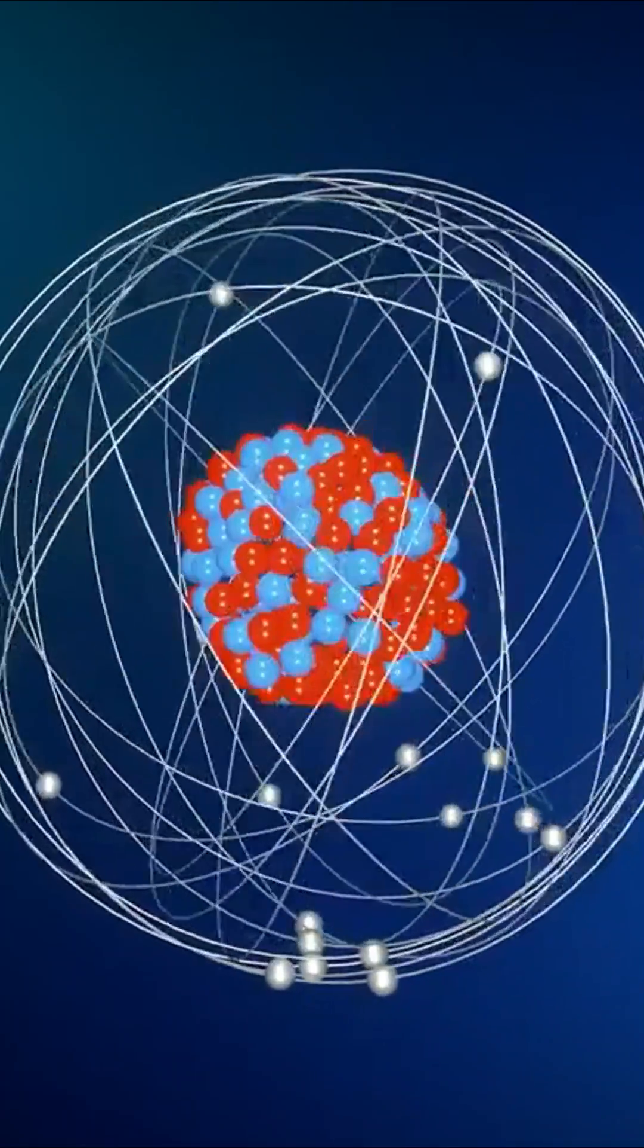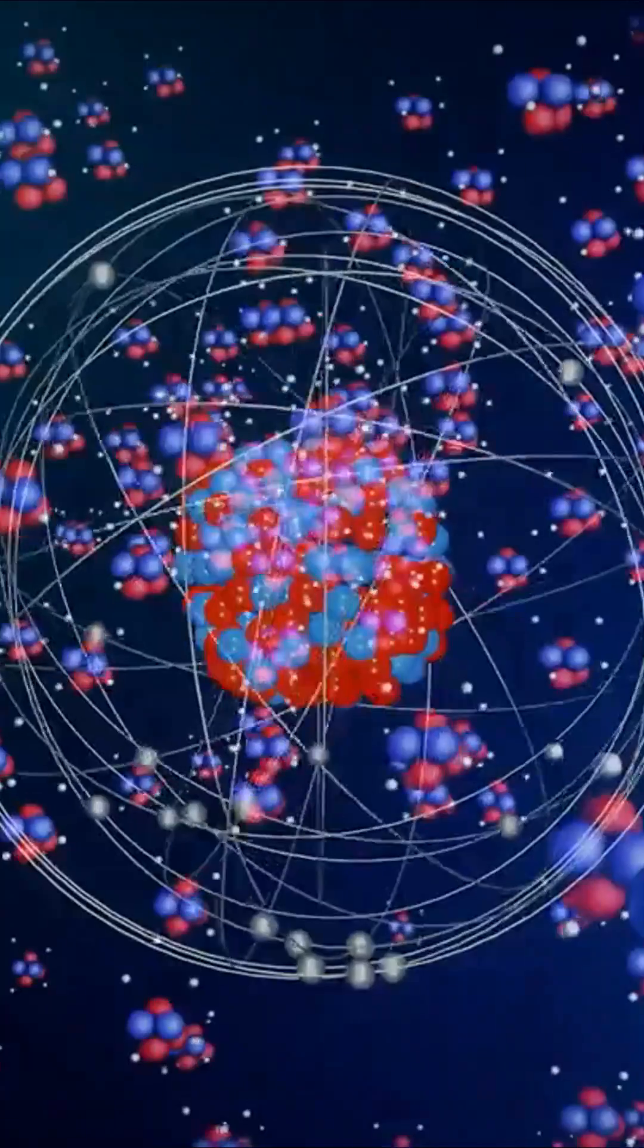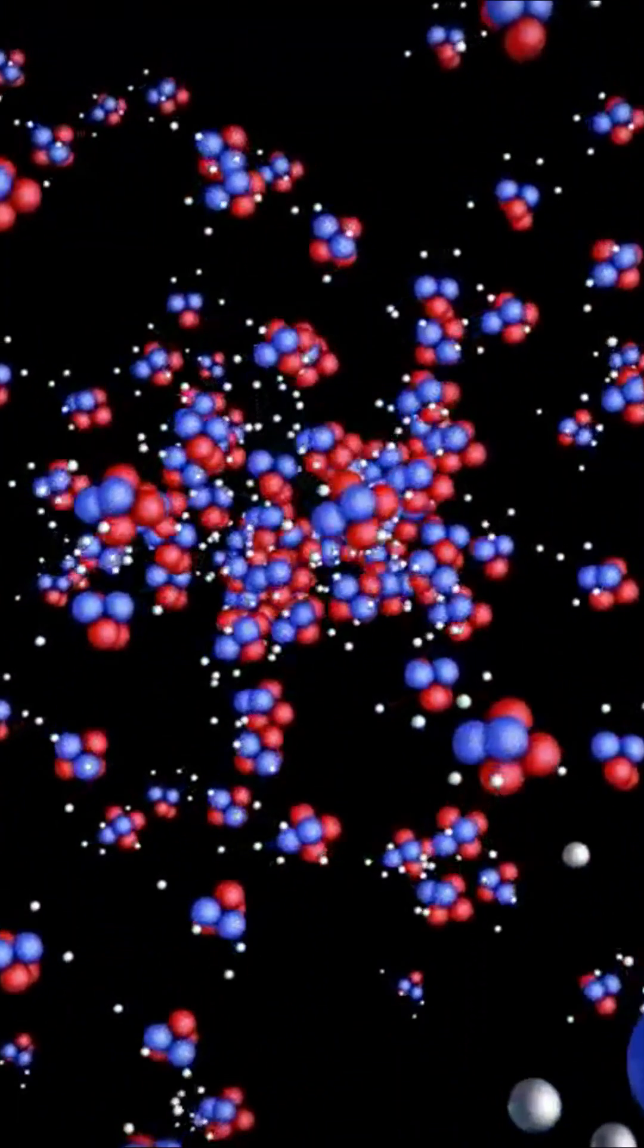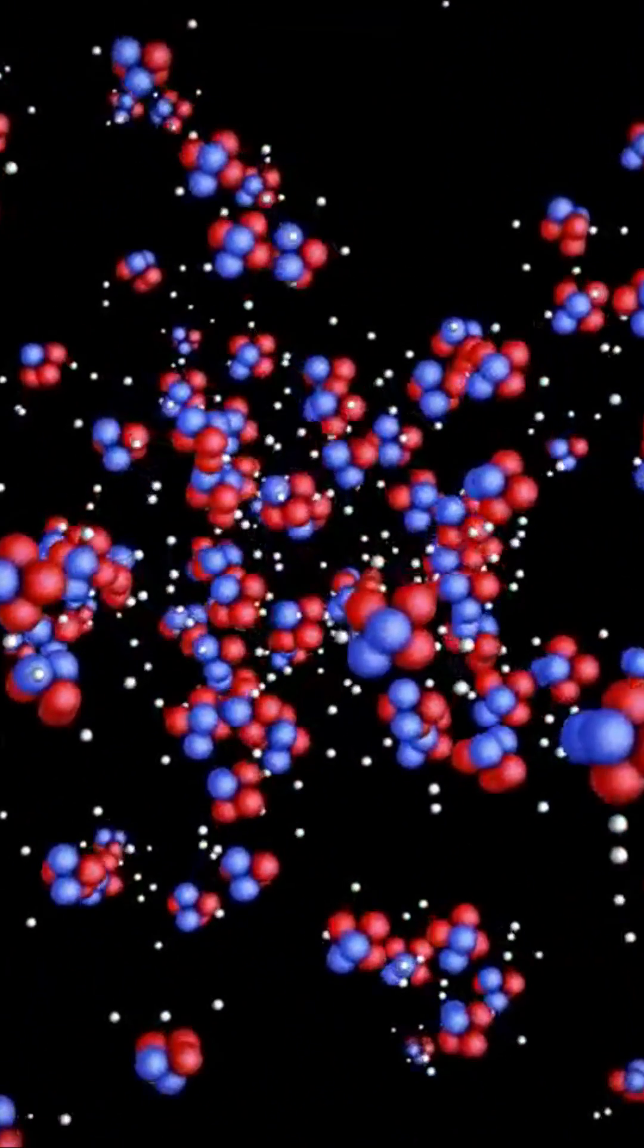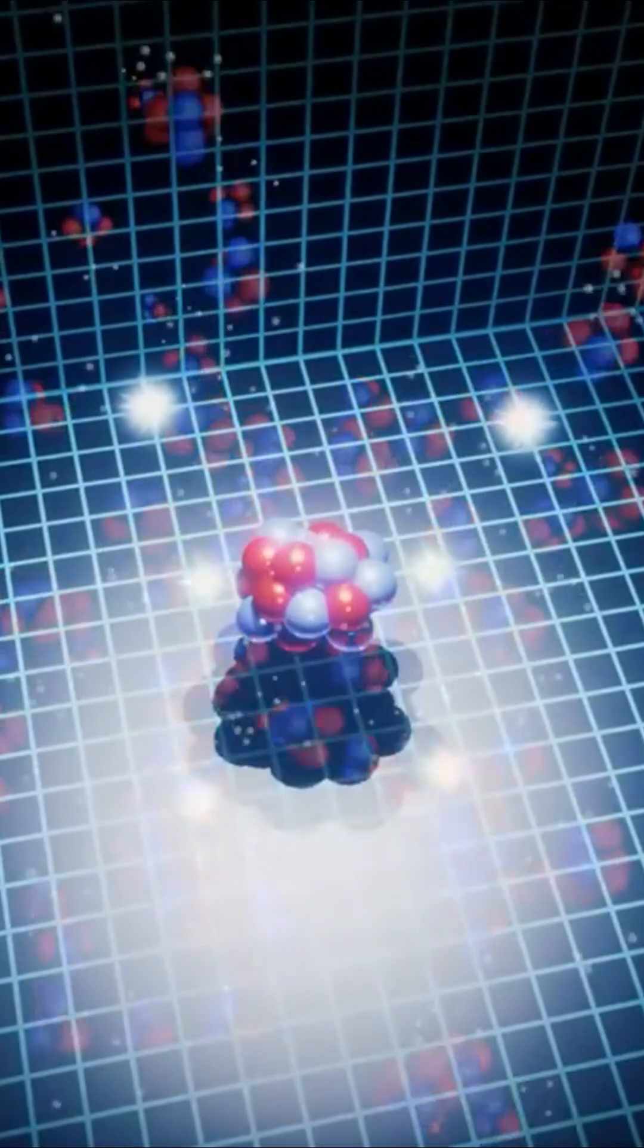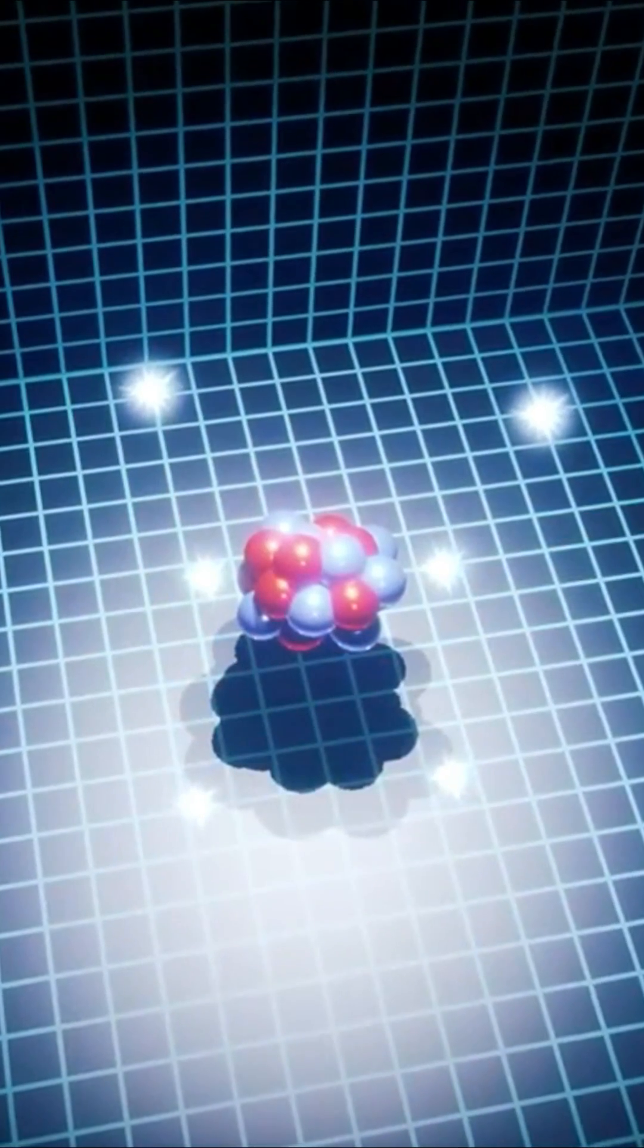The neutron is therefore a subatomic particle which, unlike the proton, has a neutral electric charge. These two particles concentrate most of the atom's mass.